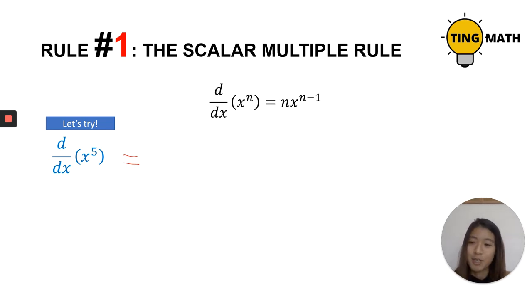Let's try it. So this is x to the power of five. We are going to differentiate it. We're just simply going to bring that power down and then put in front of x. And then from the five, we will minus one.